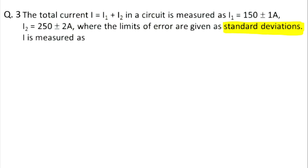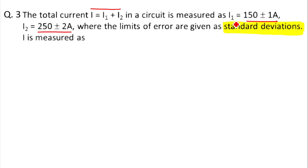Today we will again solve some problems on error analysis. In the first problem, we have been given the total current IE which is measured using KCL: i = i1 + i2. i1 is given as 150 ± 1 and i2 is given as 250 ± 2. One notable thing here is that the error given is in the form of standard deviation.